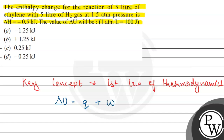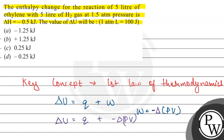Thermodynamically, the work done is equal to delta PV — it is negative of delta PV. So we have delta U is equal to Q plus the negative of delta PV, which gives us delta U equals Q minus delta PV.